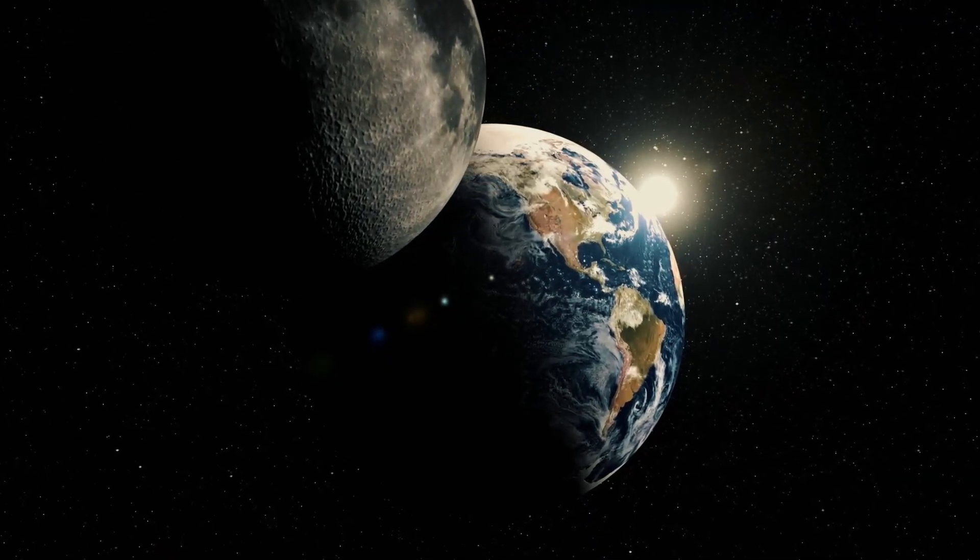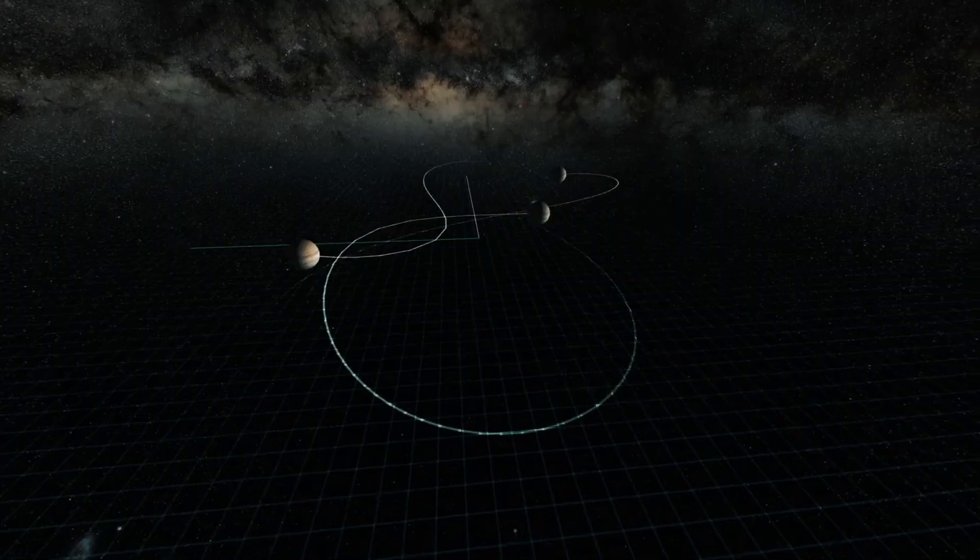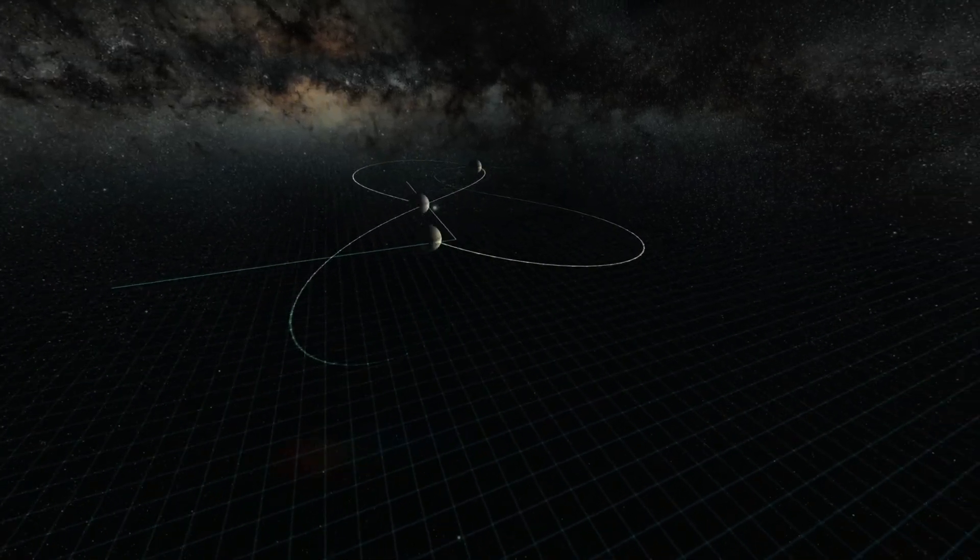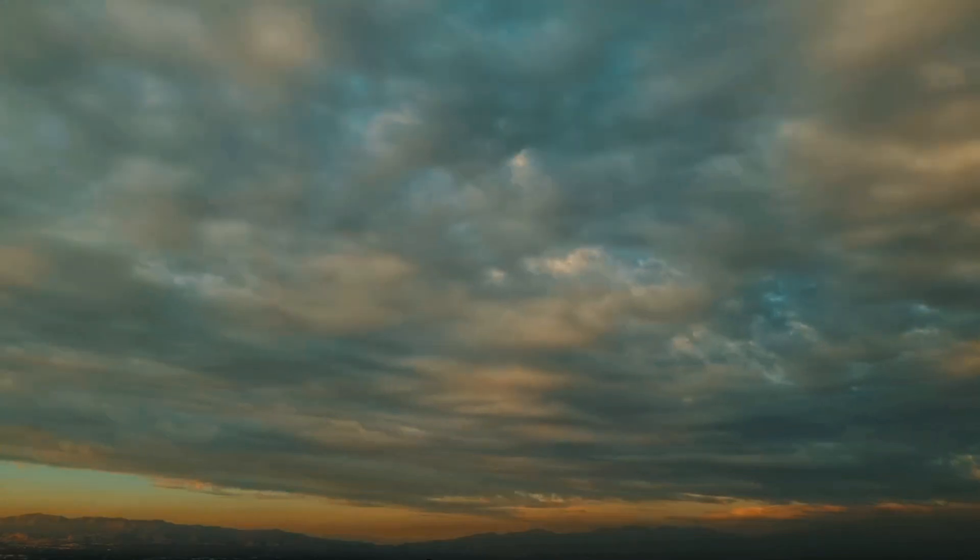Chaos might sound like an abstract idea, but it's very real in celestial mechanics. When we say a system is chaotic, we mean that tiny changes in the initial conditions can lead to dramatically different outcomes.